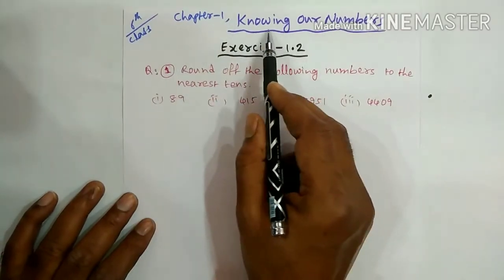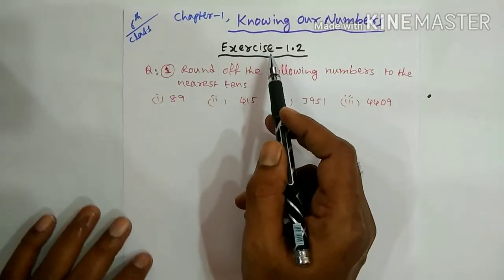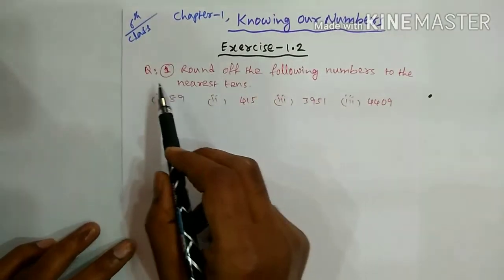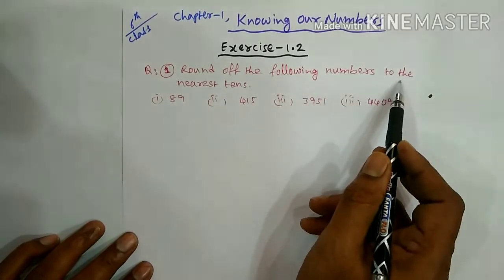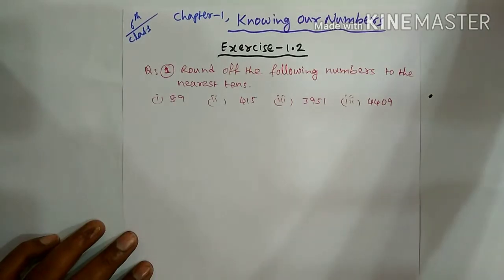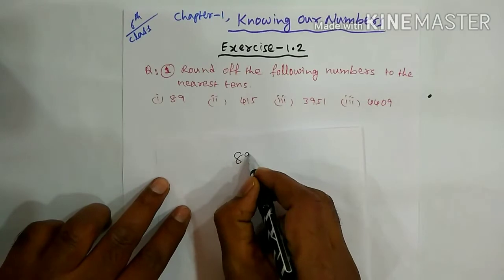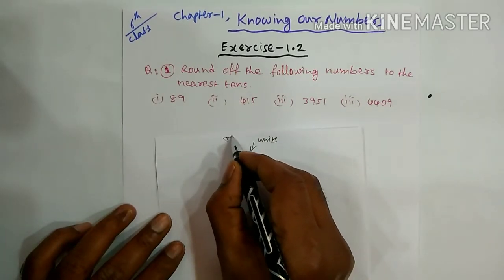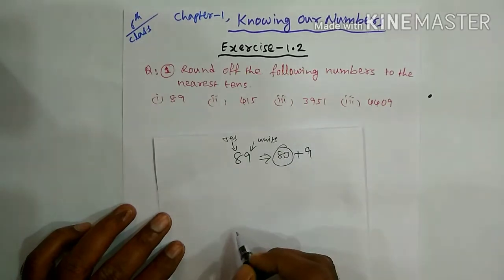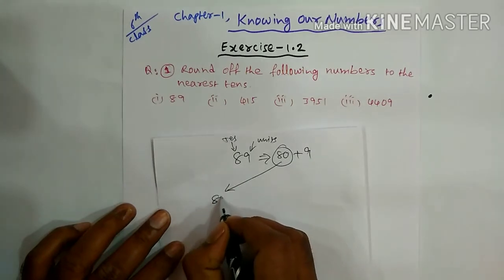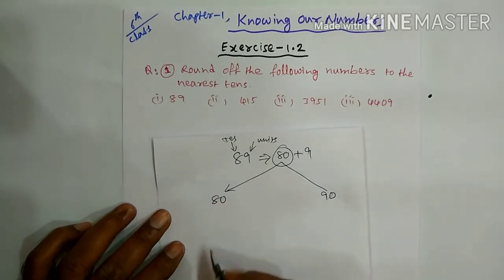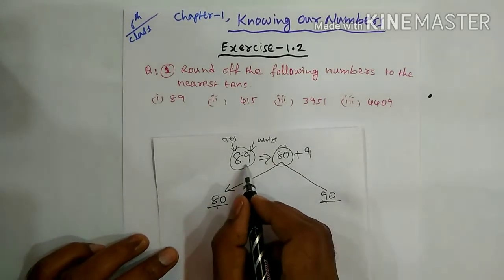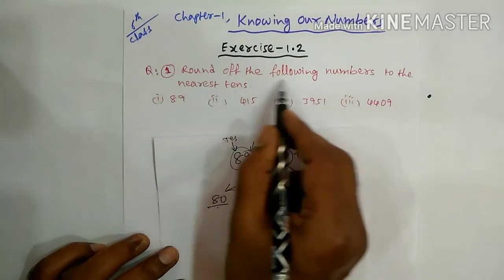Class 6, Chapter 1: Knowing Our Numbers, Exercise 1.2. Up to Exercise 1.1 we finished in the previous video. Now we are going to explain Exercise 1.2. Question number 1: round off the following numbers to the nearest tens. First question: 89. The 9 is in the units place and 8 is in the tens place, so tens range is 80 to 90. Since 89 is nearer to 90, it is rounded off to 90.